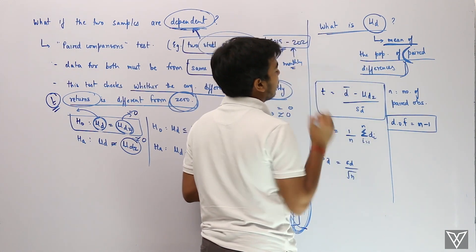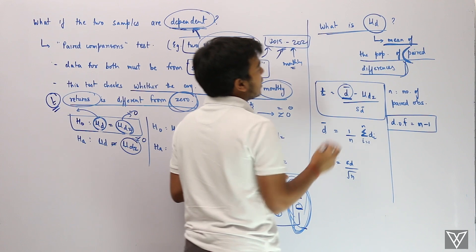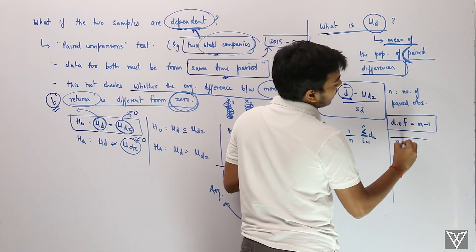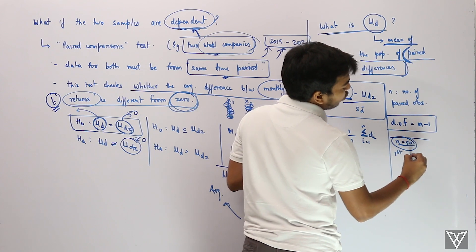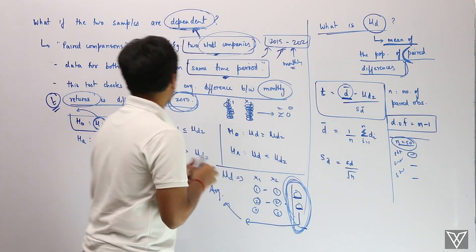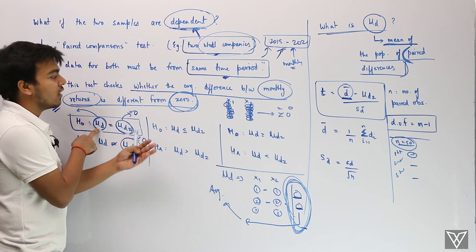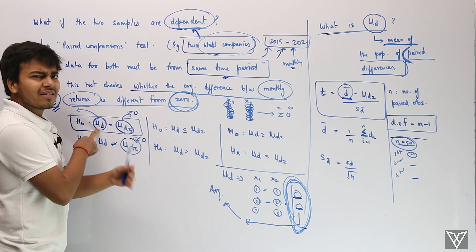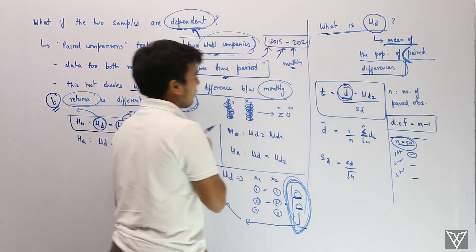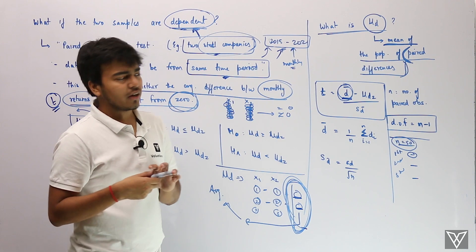The t-test formula here is: t = (d-bar minus mu_dz) divided by the standard deviation of d-bar. D-bar is computed at the sample level — for each observation in the sample, you compute the difference between the two series. For a sample of size n, you find the difference for the first, second, third observation and so on. The standard deviation of d-bar is calculated as the square root of [sigma(d_i minus d-bar)^2 divided by (n minus 1)].